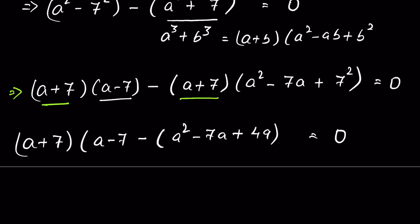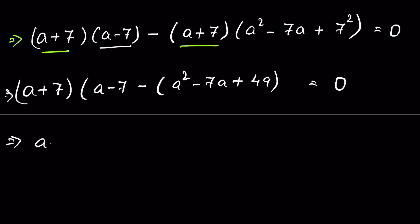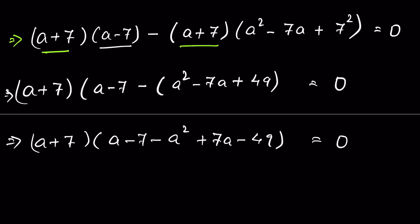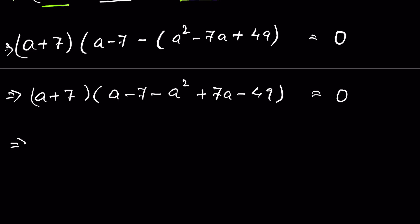Expanding inside the second factor: (a + 7) times (a − 7 − a² + 7a − 49) equals 0. Combining like terms: 7a + a gives 8a, and −7 − 49 gives −56, so we have (a + 7)(−a² + 8a − 56) equals 0.